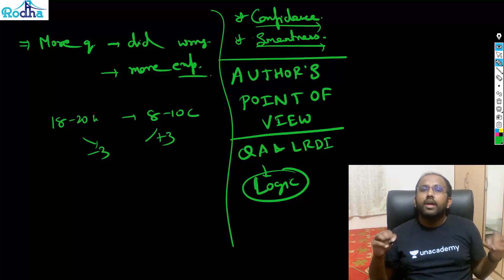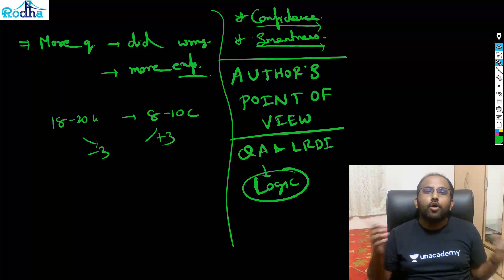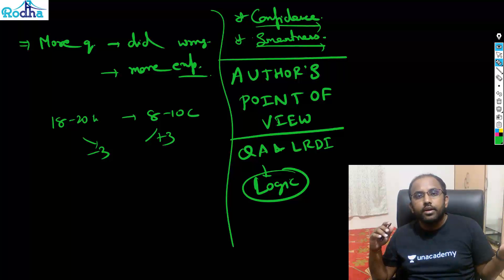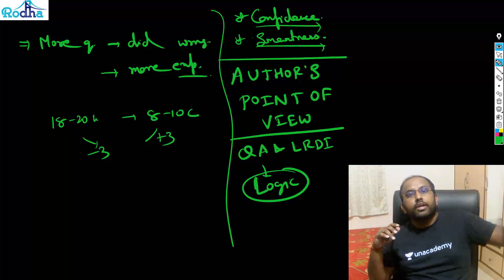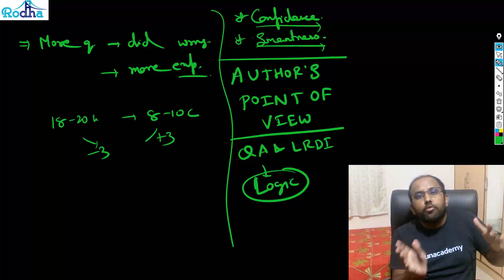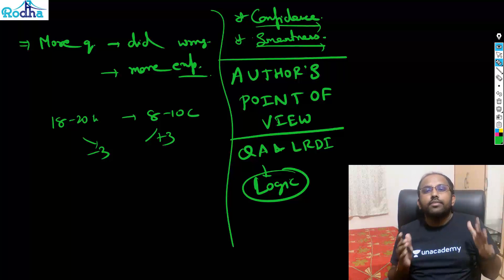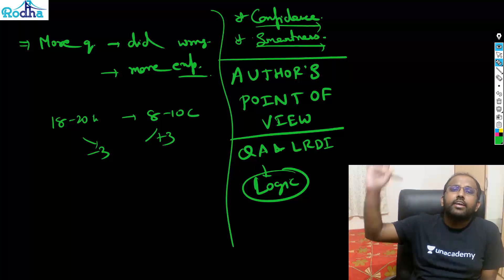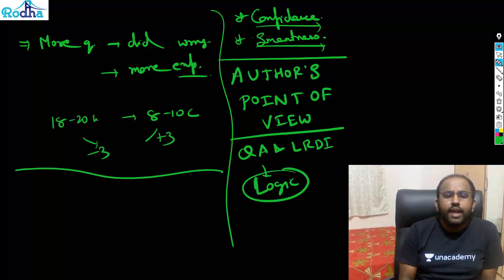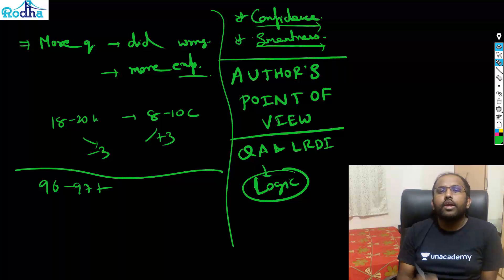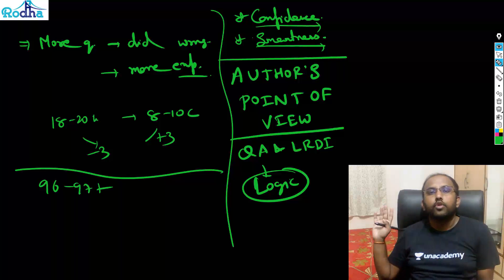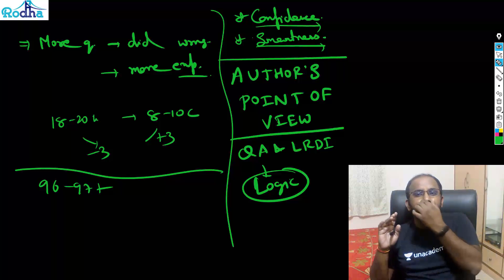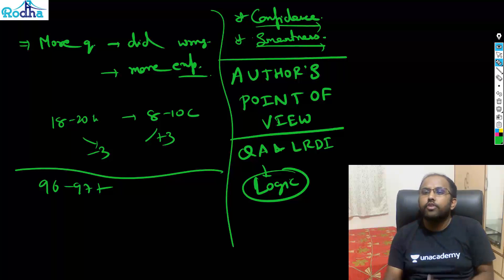It's just like cricket — maybe you're not as talented as Virat Kohli or Rohit Sharma, but other players still hit centuries and win matches. Similarly, we may not be among those getting 99-plus in CAT, but we can score 96 or 97 in verbal — enough to clear the cutoffs for good colleges. So have that confidence, have that smartness, and attempt verbal strategically.